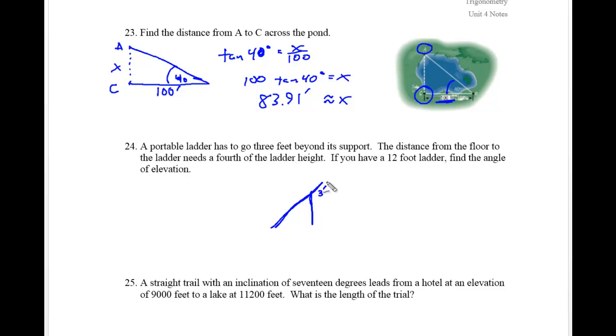It says maybe OSHA. And it says the distance of the floor of the ladder needs to be a fourth of the ladder's height. So this is important because it says if you have a 12 foot ladder, so this whole distance is 12 here.